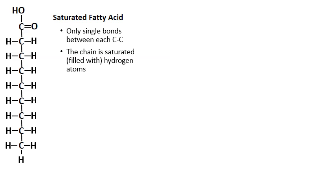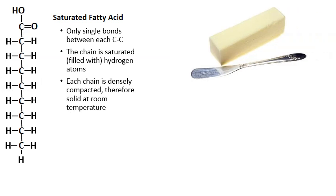Remember, carbon bonds up to four times. Every single open bond is occupied by hydrogen. And as a result, this saturated fatty acid chain is dense and compact and therefore solid at room temperature, such as butter that you see in the upper right hand corner.